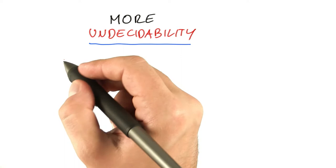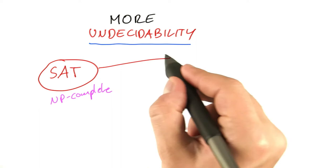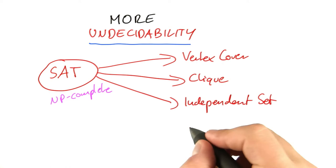And the technique here is almost the same that we used for showing NP-completeness. So you remember that once we had shown SAT to be NP-complete, we could take a whole bunch of other problems such as vertex cover, clique, and independent set, and of course many more.